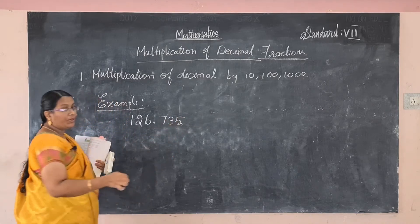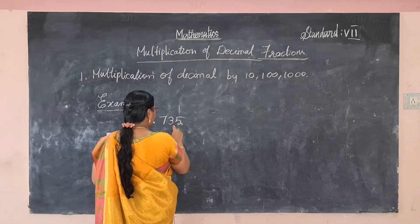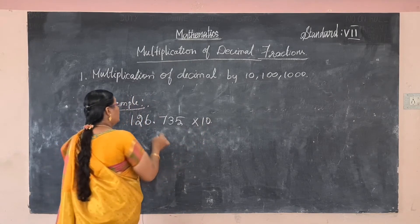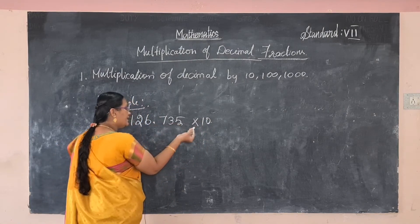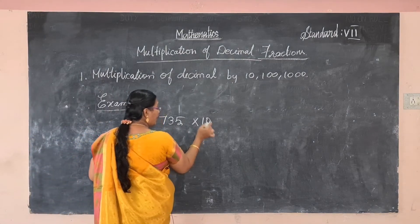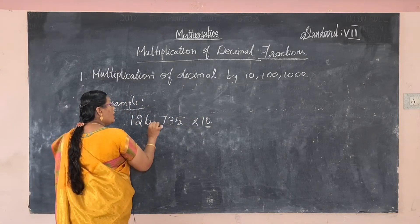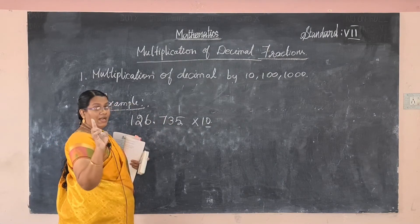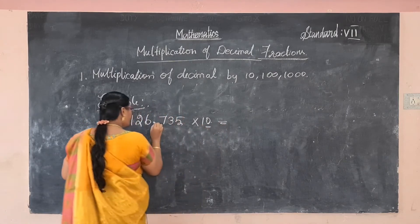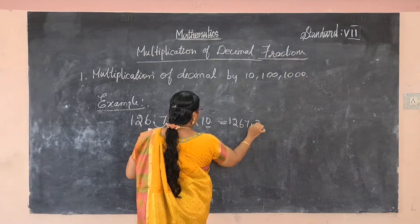After the decimal point, read the numbers individually: 126.735 multiplied by 10. The decimal point shifts to the right side. How many zeros are in 10? Only one zero. So the decimal point moves one decimal place. The answer is 1267.35.